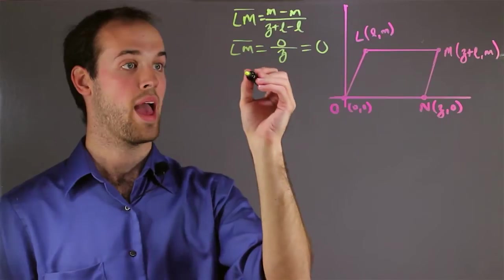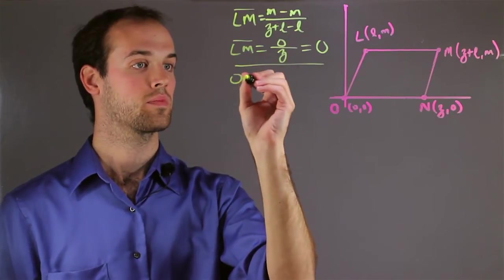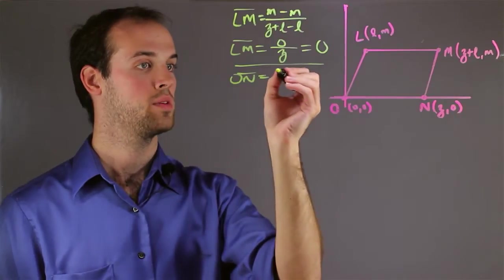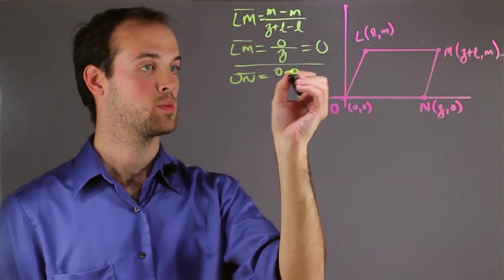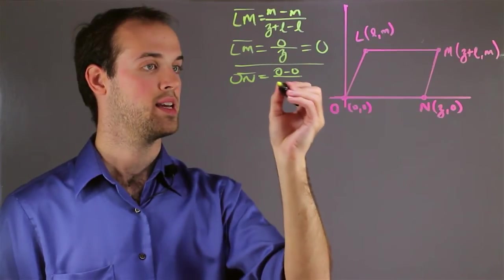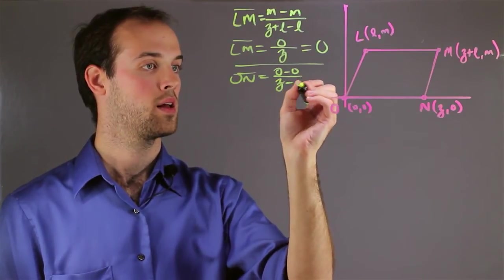Let's see what the slope of ON is. Again we want to take the second y-coordinate, zero, and the first y-coordinate, zero, subtract them, and then I want to have the second x-coordinate, Z, minus zero, which is the first x-coordinate.